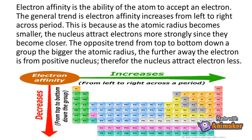Electron affinity is the ability of the atom to accept an electron. The general trend is that electron affinity increases from left to right across a period. This is because as the atomic radius becomes smaller, the nucleus attracts electrons more strongly since they become closer. The opposite trend occurs from top to bottom down a group — the bigger the atomic radius, the further away the electron is from the positive nucleus, and therefore the nucleus attracts electrons less.